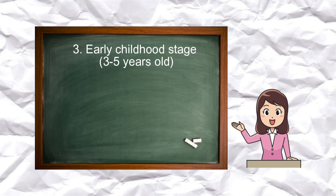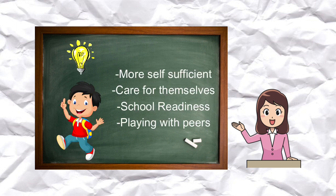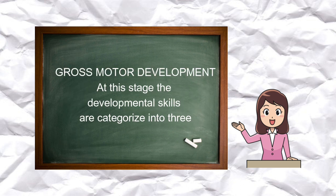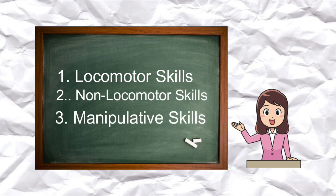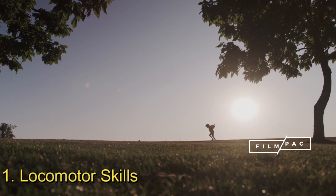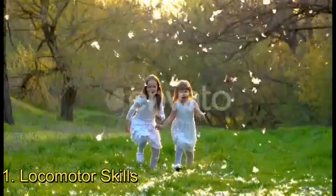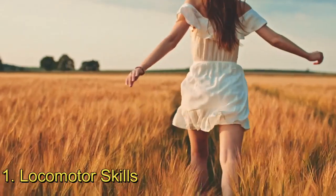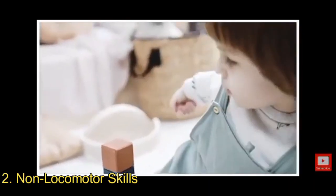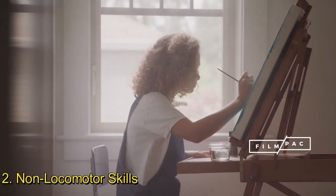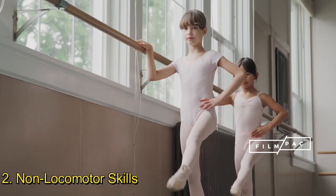At the early childhood stage, young children learn to become more self-sufficient and to care for themselves, develop school readiness skills, and spend many hours in play with peers. Gross motor development at this stage is characterized by three categories: locomotor skills, non-locomotor skills, and manipulative skills. Locomotor skills are the skills used by an individual to move from one place to another, and include walking, running, and climbing. Non-locomotor skills involve movement in which the body does not travel — they can be performed while staying in the same space — with examples including bending, stretching, and turning.